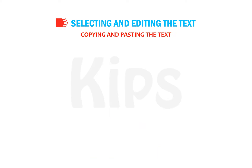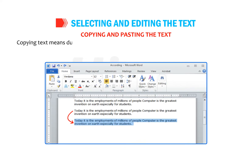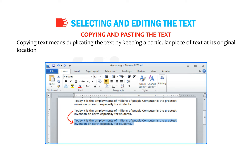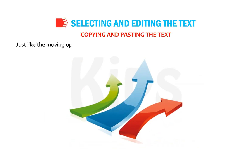Copying and pasting text means duplicating the text by keeping a particular piece of text at its original location as well as pasting it at another location. This feature helps save time and effort in typing. Just like the moving operation, the copying operation can also be carried out in three different ways.